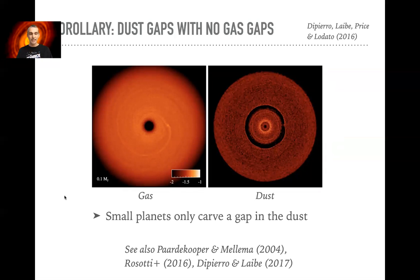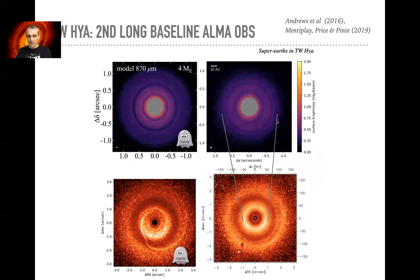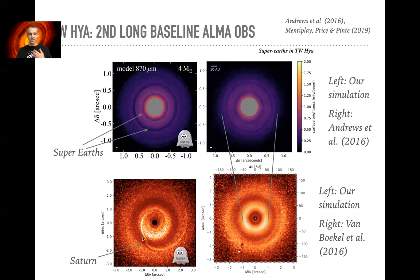Small planets are quite detectable in the continuum millimetre emission. That was followed by the second long-baseline ALMA observations published by Andrews et al. in 2016, showing wonderful rings in the TW Hydra disk — our nearest protoplanetary disk at 50 parsecs. The interesting thing in TW Hydra is that this outer gap in particular has no corresponding feature in the scattered light image, indicating it's a dust gap but not a gas gap. Our modelling reproduced this with very low-mass planets — super-Earth type bodies that, while not directly detectable, are inferred by the ALMA observations. For the outer deep gap seen in the sphere image, you need a much more massive body, suggesting something like a Saturn.